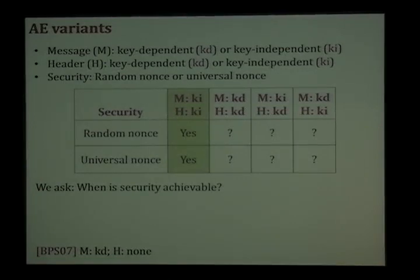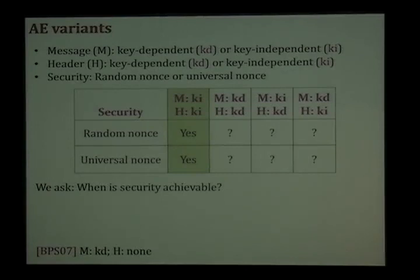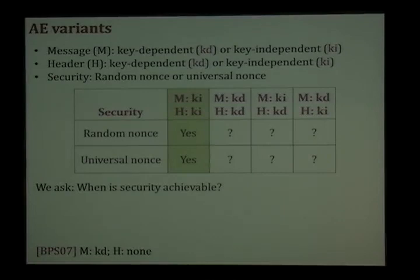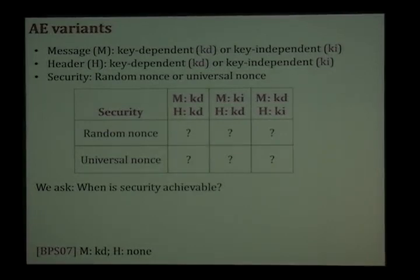There is another issue: if we cannot get security in some of these variants, can we at least show that it is not possible to achieve security — for example, show attacks that break any scheme in that variant? One thing is easy: if the message and the header are both independent of the key, we fall back to normal authenticated encryption. We know we can achieve this; we have standardized and secure schemes for this setting.